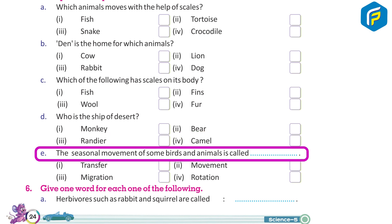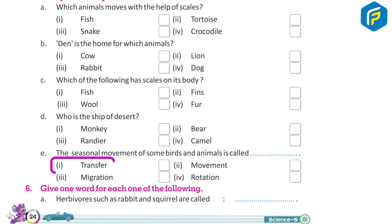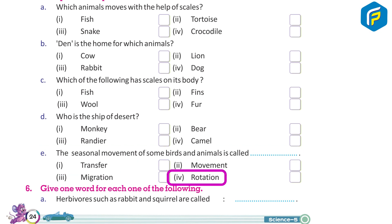The seasonal movement of some animals is called ___. 1. Transfer, 2. Movement, 3. Migration, 4. Rotation.